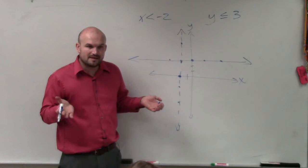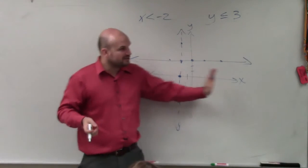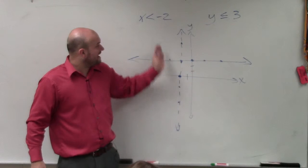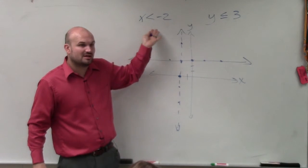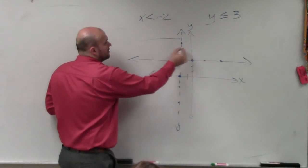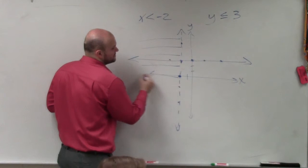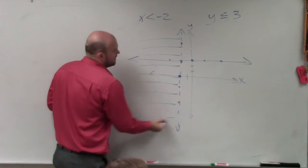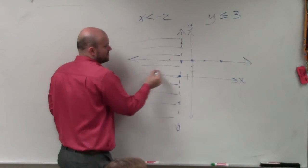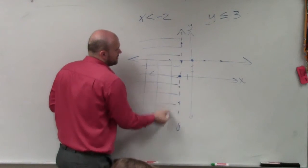Now you guys can just think about this. You can even go back. Here's your number line. We created a vertical line here. All x values that are less than negative 2 are going to be going to the left. Would you guys agree? And then all y values that are less than or equal to 3 are going to be going down.